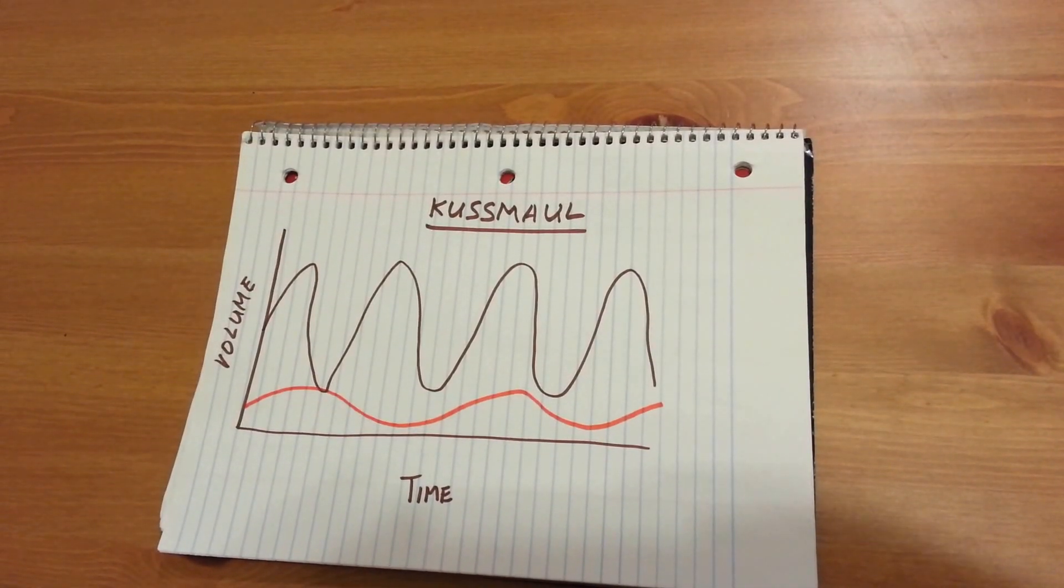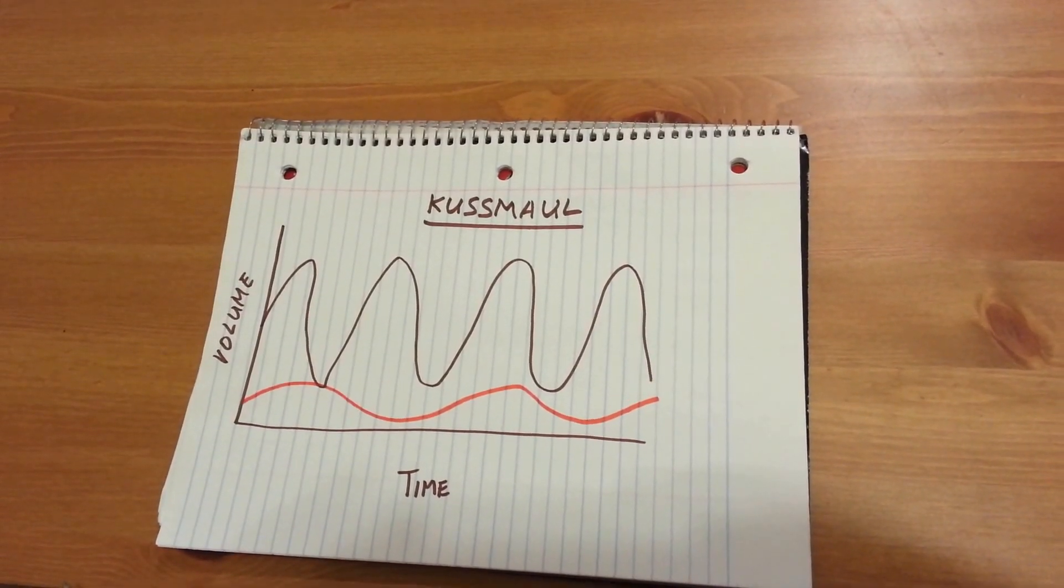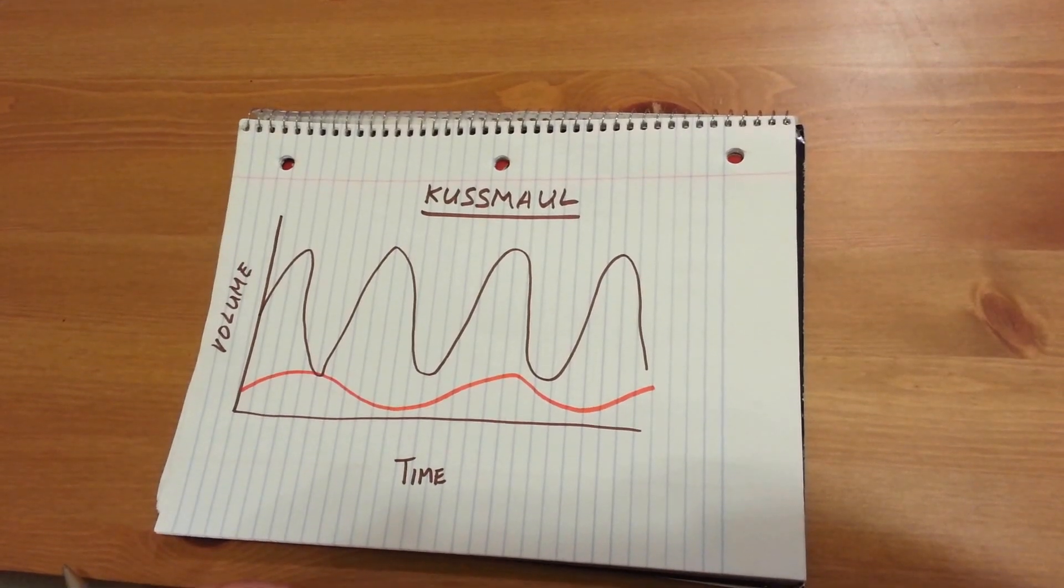Kussmaul breathing is a deep, unlabored form of hyperventilation that usually occurs during severe metabolic acidosis.